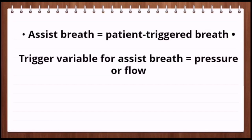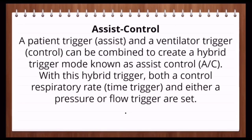Simply put: an assist breath is a patient-triggered breath. The trigger variable for an assist breath is either pressure or flow. Now, assist control combines patient trigger (assist) and ventilator trigger (control) to create a hybrid trigger mode known as assist control. With this hybrid trigger mode, both a controlled respiratory rate (time trigger) and either a pressure or flow trigger are set together.